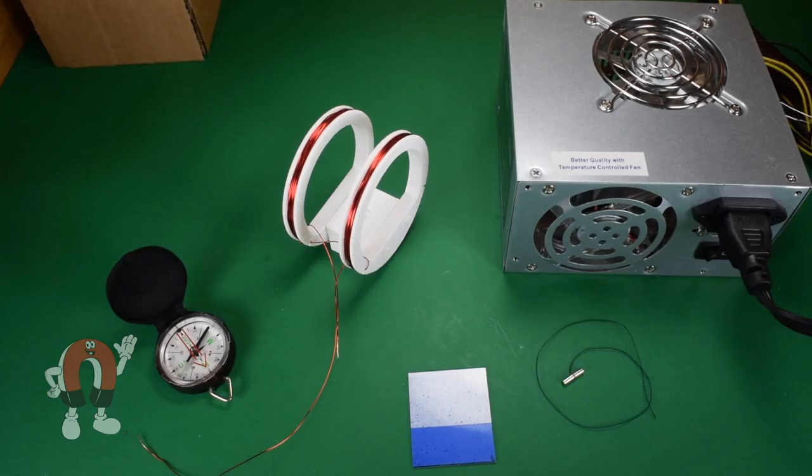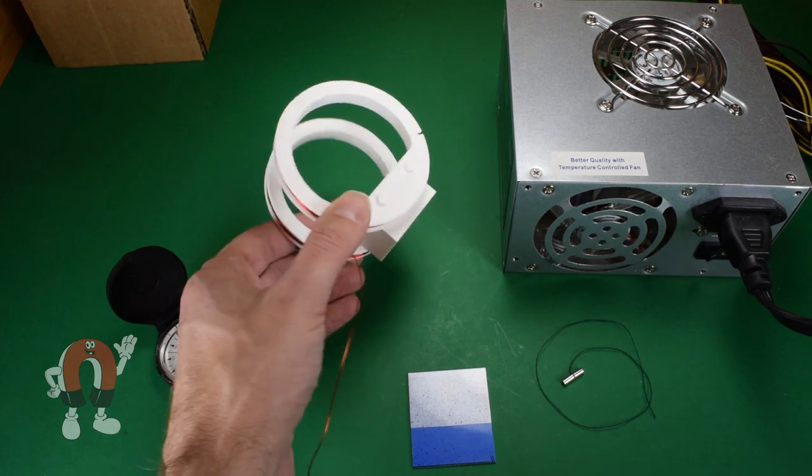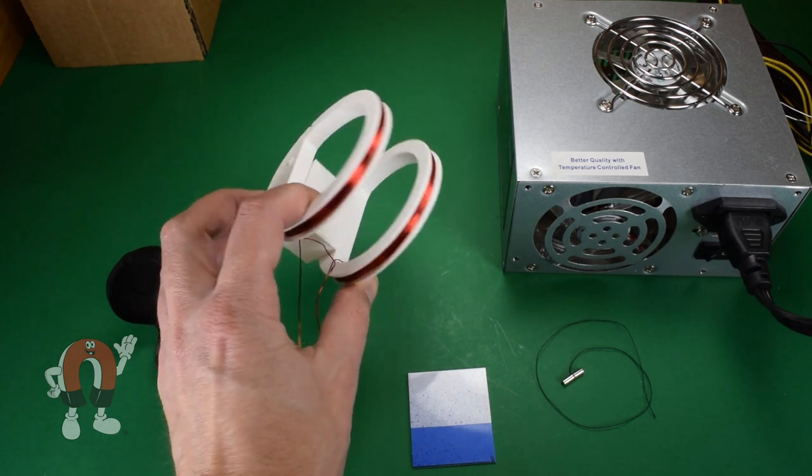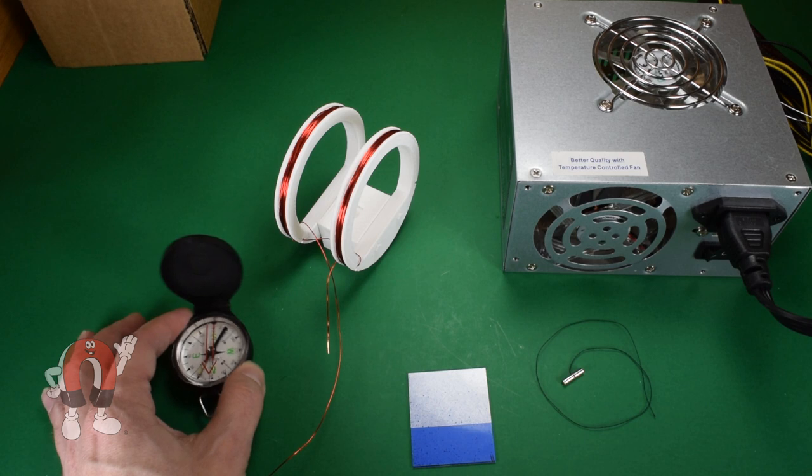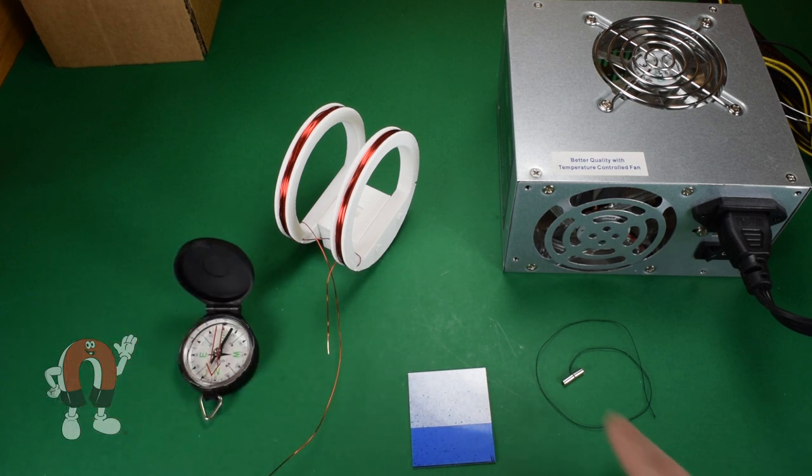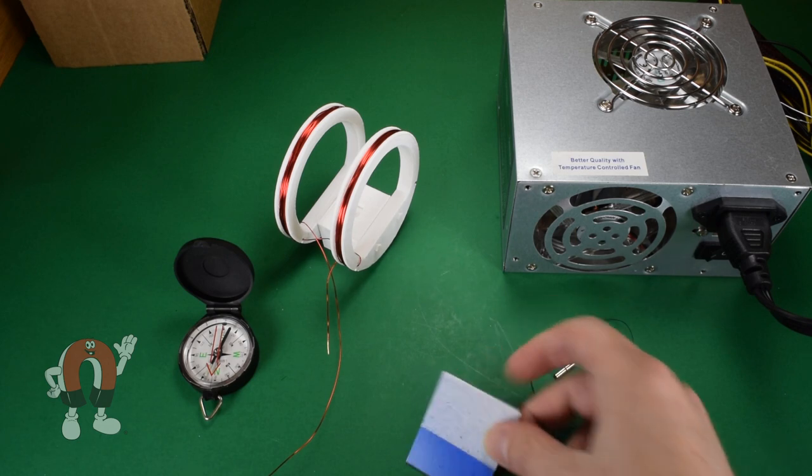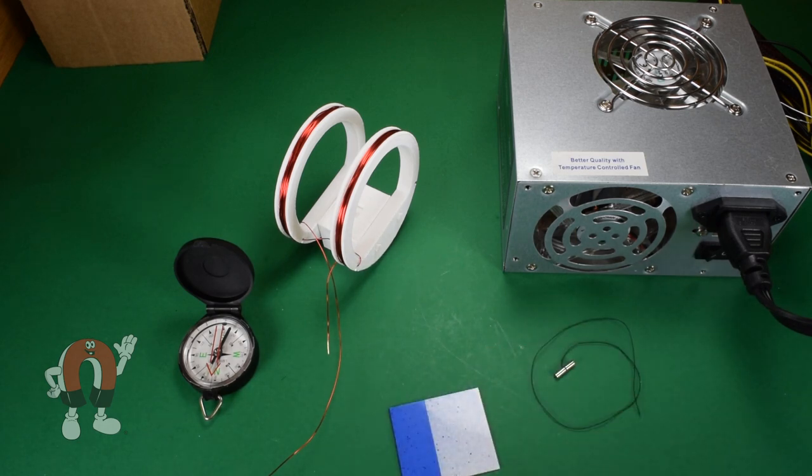We're using two hoops of magnet wire wrapped around a 3D printed Helmholtz coil holder. We have a simple compass, a pair of small cylinder magnets sandwiched on a length of thread, a scrap of aluminum, and a DC power supply from an old computer.